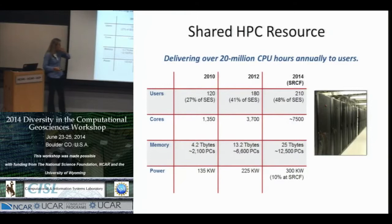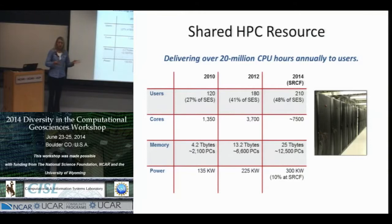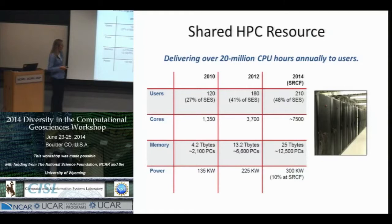We're a fully shared facility — faculty buy in, we also have some buy-in from the dean, and we pool our money together to buy nodes. Each person gets priority on whatever nodes they purchased, but when they're not being used, other users can come in and use them. This makes it much more efficient, and it allows us to let people in who aren't traditionally computational. We update our cluster every year and a half or so, taking the old cluster and opening it up to the entire School of Sciences. The number of groups is approximately 20, and we support about half the School of Earth Sciences.